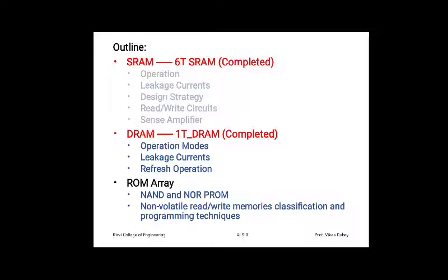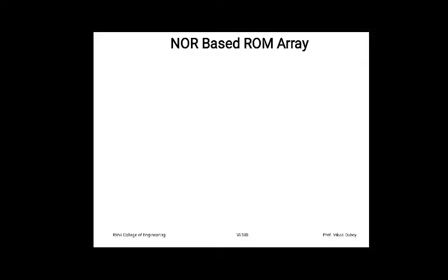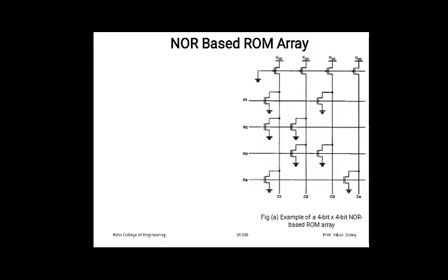We are now going to revise the NOR based ROM array, which was covered in the last lecture. Here we can see a 4×4 NOR based ROM array. R1, R2, R3, R4 are the word lines connected to the gate terminals of transistors. Column lines C1, C2, C3, C4 carry the data. Each column is connected to a depletion load whose gate is grounded, so the depletion transistor is always ON.